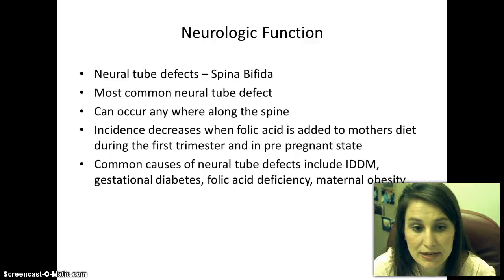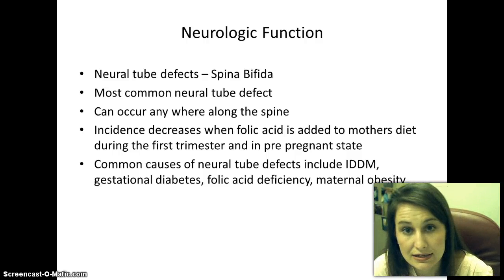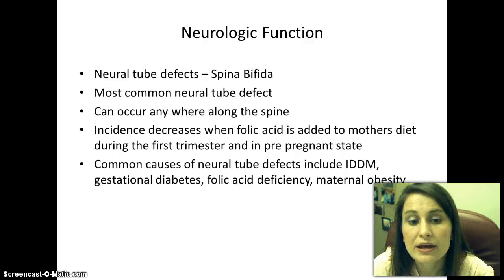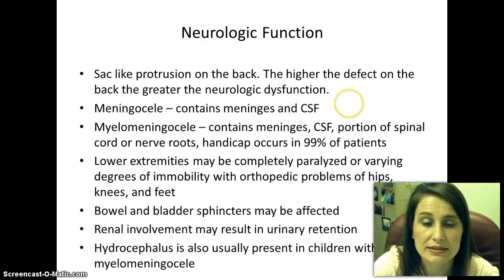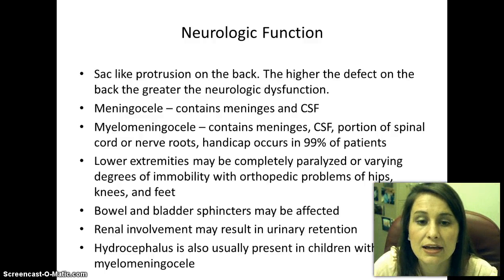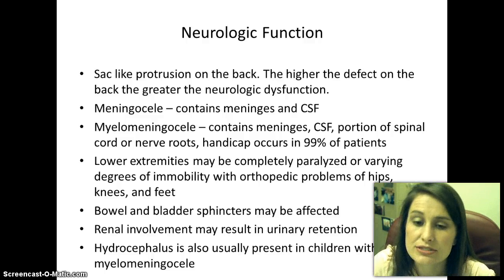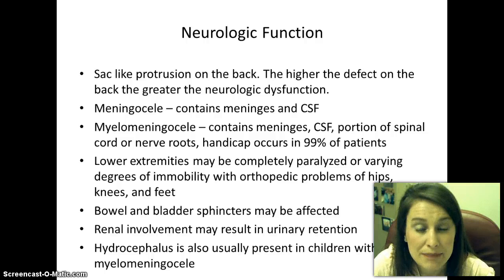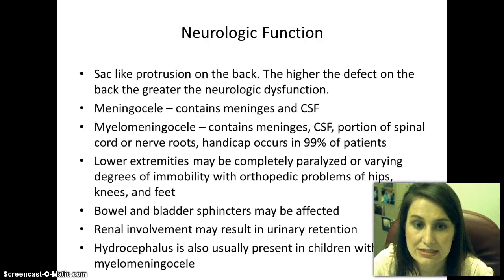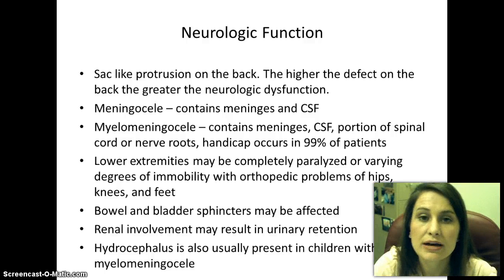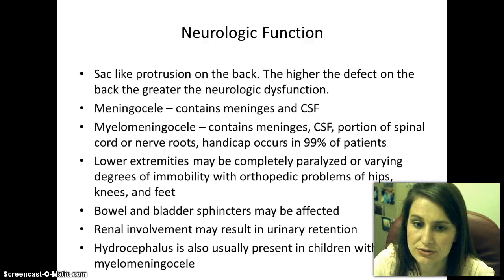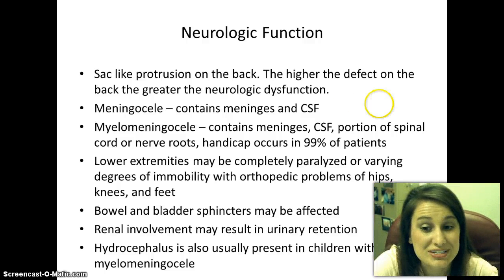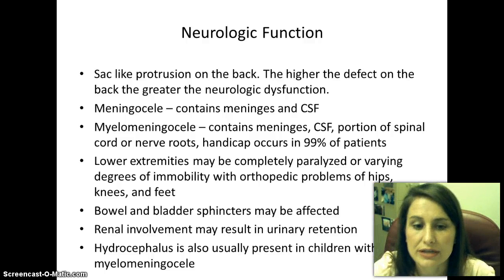Spina bifida is a neural tube defect that can occur anywhere along the spine. Sometimes it's concealed — all you see is a little tuft of hair, or a vertebra may be missing but not noticeable. Other times it can be very obvious with an actual protrusion or sac on the back. A meningocele contains meninges and cerebrospinal fluid. A myelomeningocele contains the meninges, CSF, and a portion of the spinal cord or nerve roots actually going out into the sac, making it much more detrimental.